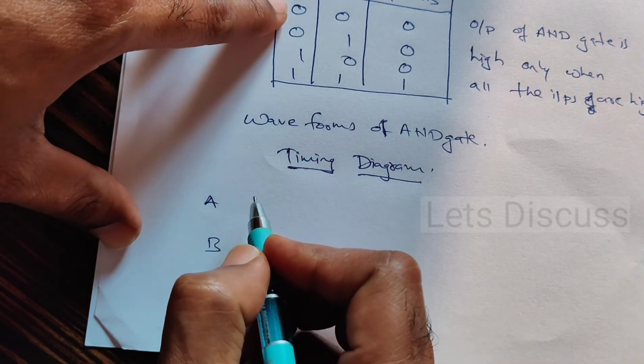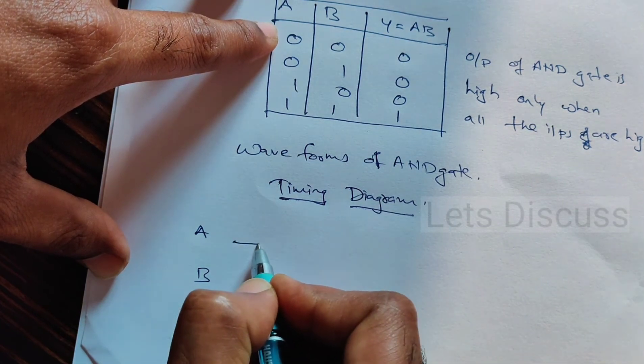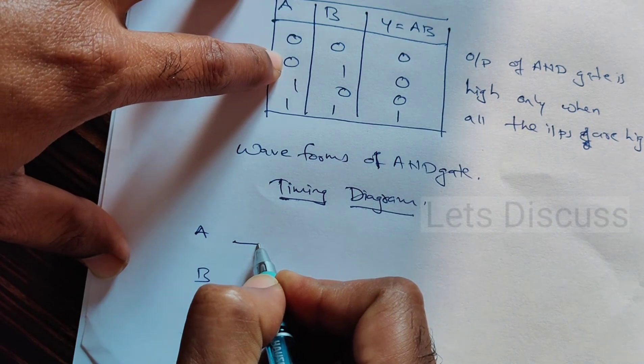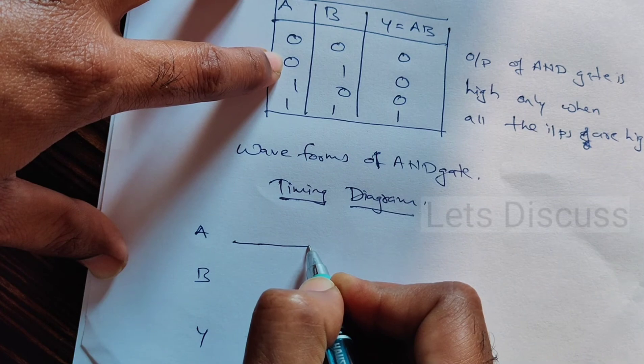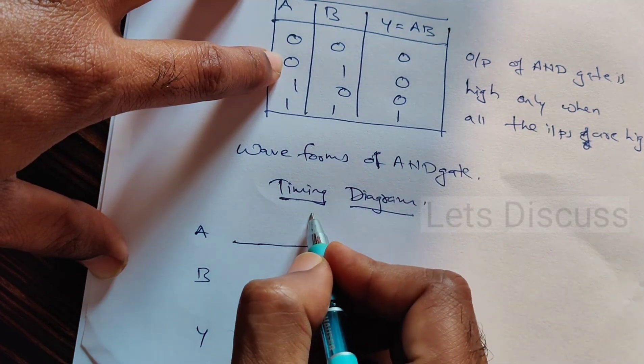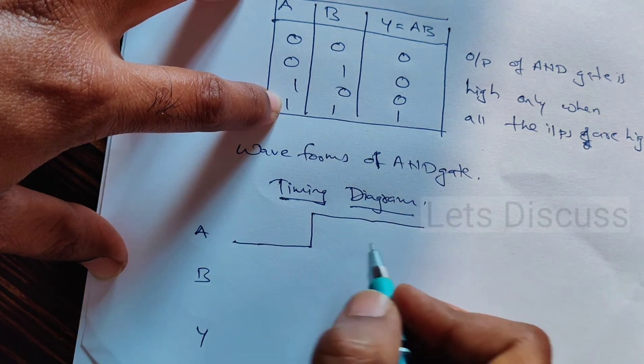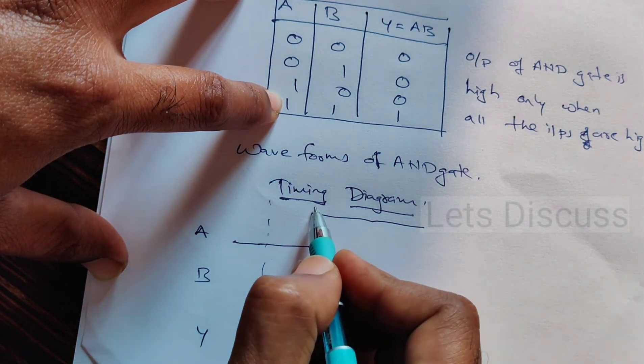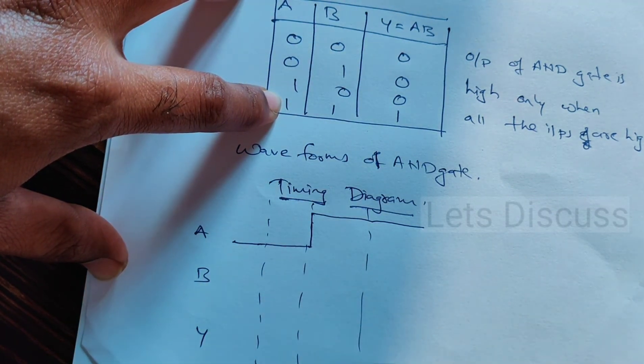Initially A is 0, it's low. Again 0, second time interval. Then 1, 1. Let us divide it for our convenience. This is the first interval, this is the second time interval, this is the third, and last is fourth.